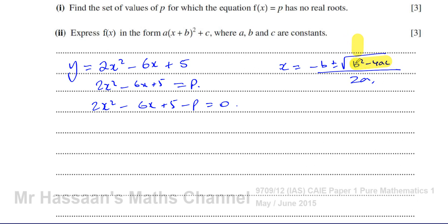If the discriminant is positive, you get two distinct solutions: (−b + √...) / 2a and (−b − √...) / 2a. If it equals zero, you get one repeated solution. If it's negative, the square root of a negative number is undefined — it gives no real root. So the equation has no real roots when b² − 4ac < 0.